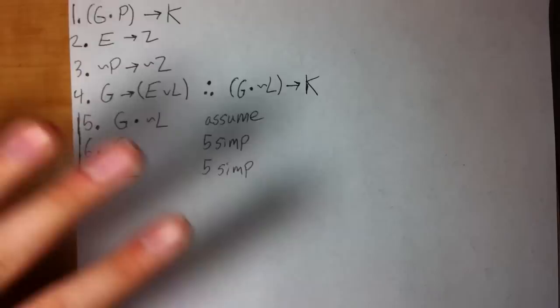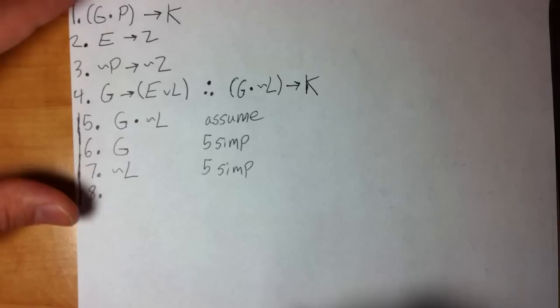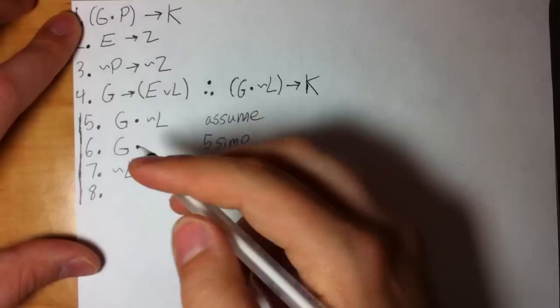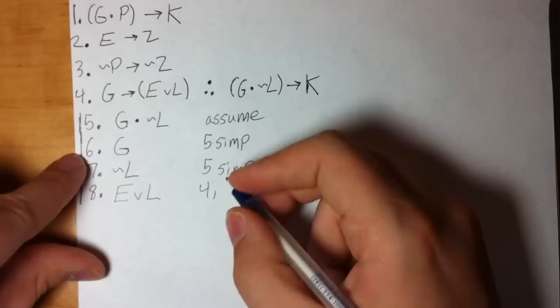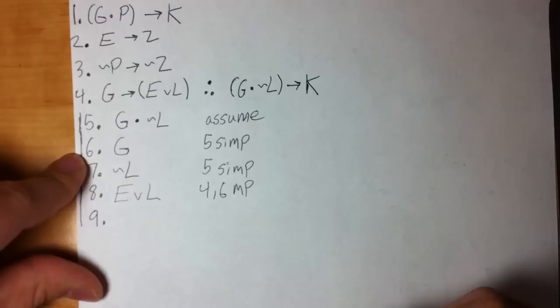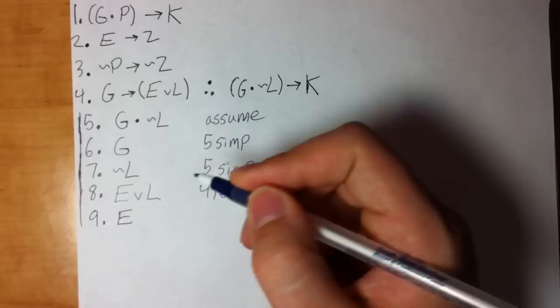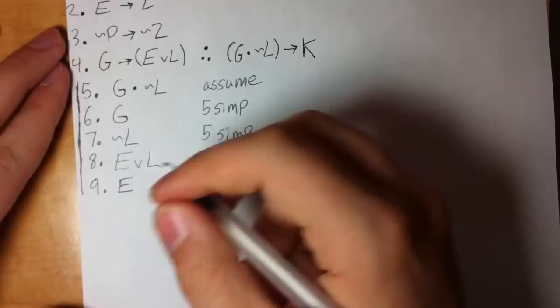Remember, don't make this more complicated than it needs to be. This line is just a note; it doesn't restrict what you can use. So looking for matches: there's an MP match, so I can get E wedge L from lines four and six, MP. Then I see a DS match — I can get E from lines seven and eight, DS.